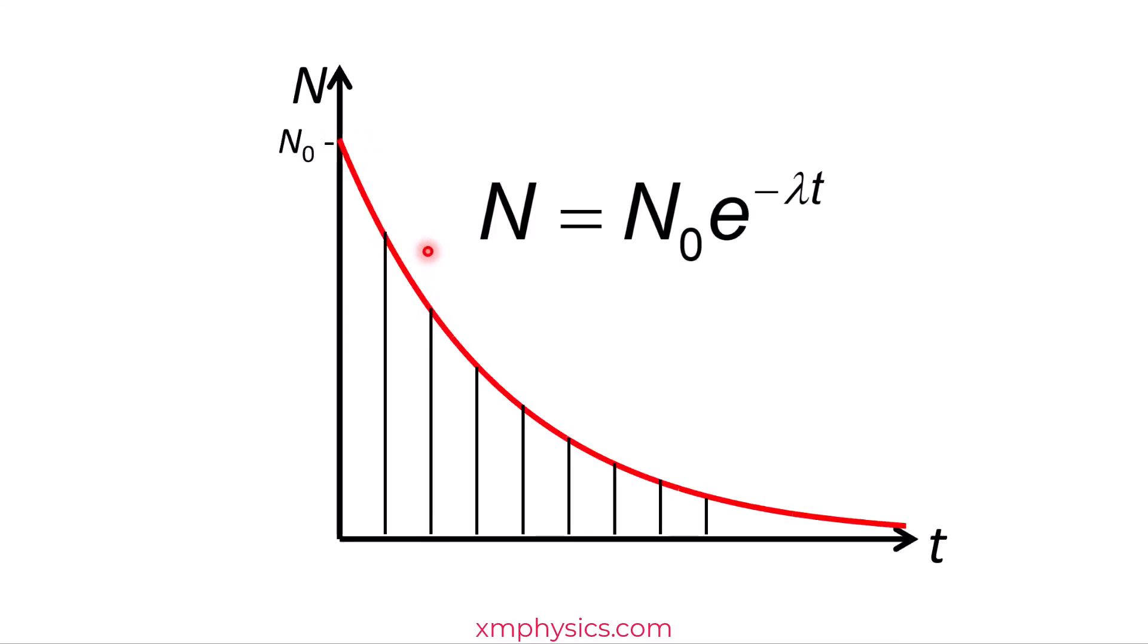And this will be 90% of this number. This will be 90% of this number. This will be 90% of this number. And so on. So the percentage decrease is constant.